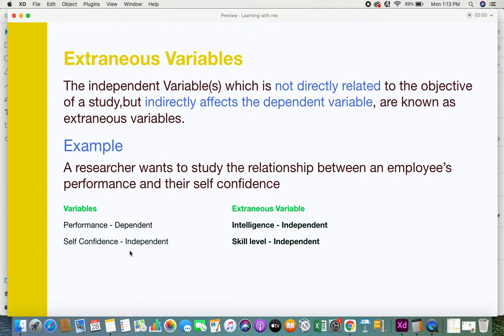Apart from only self-confidence affecting the employee's performance, there are other variables or causes, such as the employee's intelligence level or skill level. All these can also be related and contribute towards the employee's performance.